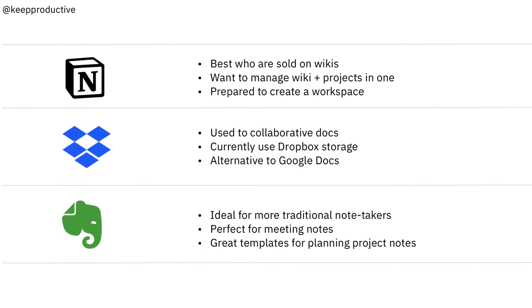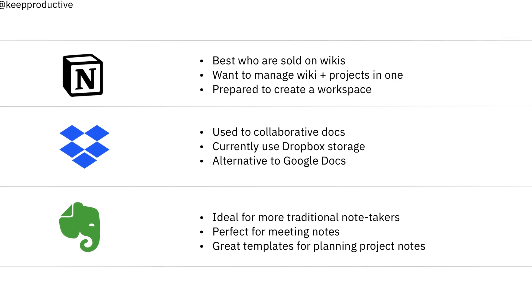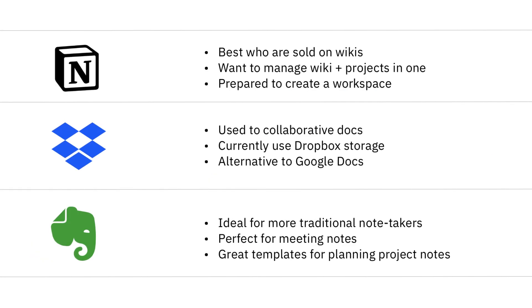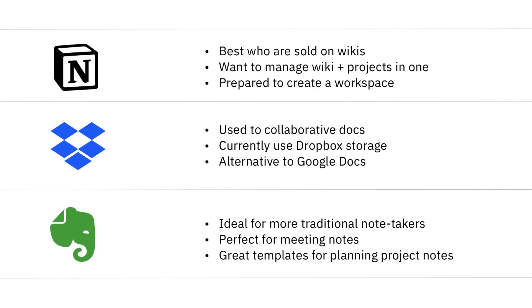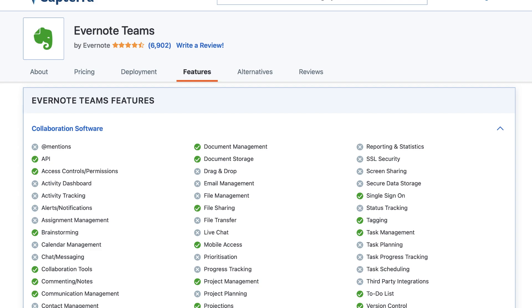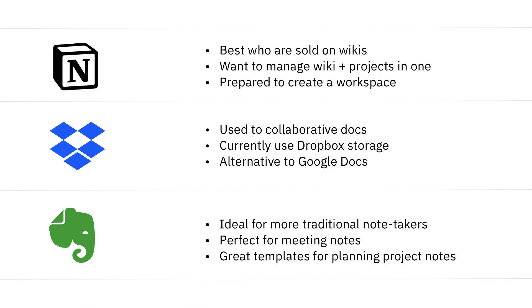Dropbox Paper is best for those wanting an alternative to Google Docs or Google Drive. If you're already a Dropbox user, it's a good add-on — though you really need a Dropbox account to get the most out of it for file storage. Evernote Teams is best for those who take traditional notes in a team setting: meeting notes, project plans, checklists, and more static content your team can access at any time. You can collaborate on projects and add tasks, but it's much more static than both Notion and Dropbox Paper.